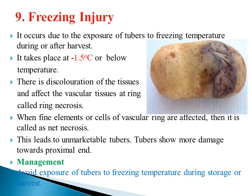Freezing injury causes discoloration of tissue and affects the vascular tissue ring, called ring necrosis. When the phloem elements or cells of the vascular ring are affected, it is called net necrosis. This leads to unmarketable tubers, with more damage toward the proximal end. Management is to avoid exposure of tubers to freezing temperatures during storage or harvest, and to keep storage temperature at 3 to 4 degrees Celsius or 8 to 10 degrees Celsius for better potato tuber storage.